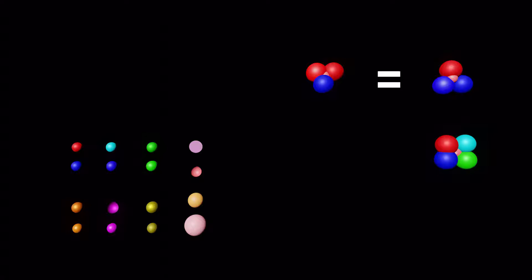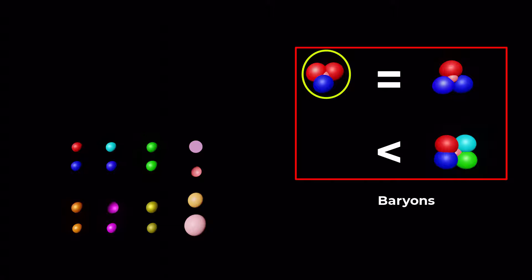Particles with masses equal to or greater than that of protons are called baryons, and both protons and neutrons are baryons. They are composite particles made up of quarks.